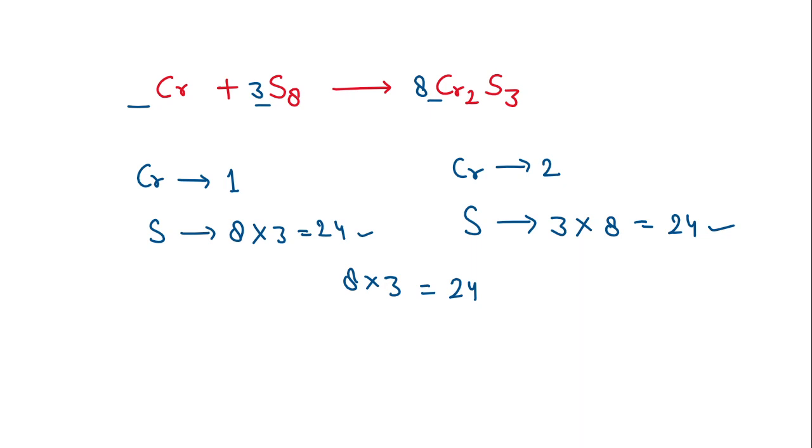Now this will change the number of chromium atoms. So here we will put 16 in front of the chromium atom. Now our reaction is balanced.